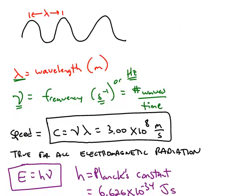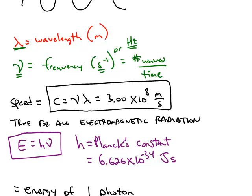Frequency and wavelength are related by this formula, which is the speed. The speed of light, or all electromagnetic radiation, is C — 3 times 10 to the 8th meters per second — and that equals the frequency times the wavelength.